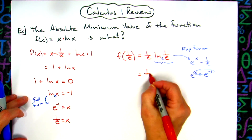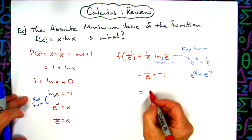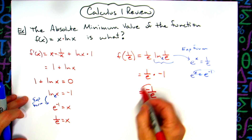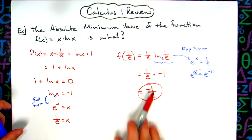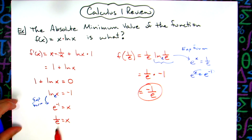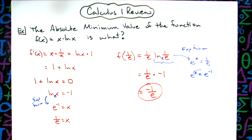So I've got 1/e times -1, which gives me an overall answer of -1/e. That's the actual y value — that's the absolute minimum value of the function. It occurs at x = 1/e, and the actual y value there is -1/e. So actually a pretty straightforward question about absolute minimum that you could encounter on a Calc 1 final exam.